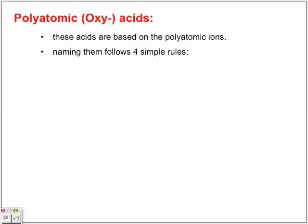Now naming them follows four simple rules. One of them, the A-T-E, the ion. So we have the polyatomic, the normal polyatomic, we add the IC acid name to it. We don't use hydro. Hydro is only for binary acids.